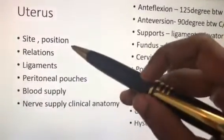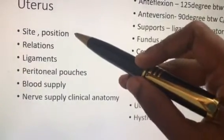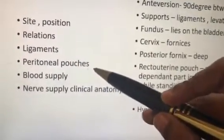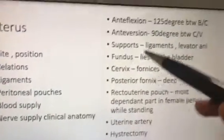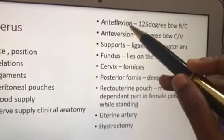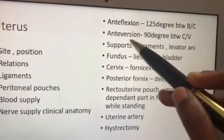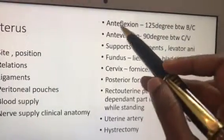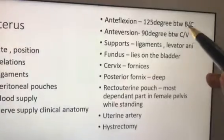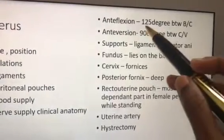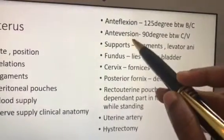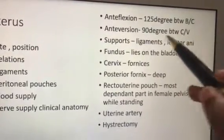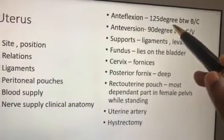Next, moving on to the uterus. You have to write about the site and position — for the position you will get two marks — and the relations and supports of the uterus, peritoneal pouches, blood supply, nerve supply, and clinical anatomy. The key point for position is anteflexion and anteversion. Anteflexion means the angle between the body of the uterus and the cervix is 135 degrees. Anteversion means 90 degrees with the vagina — between the cervix and vagina it is 90 degrees. These are MCQs also.